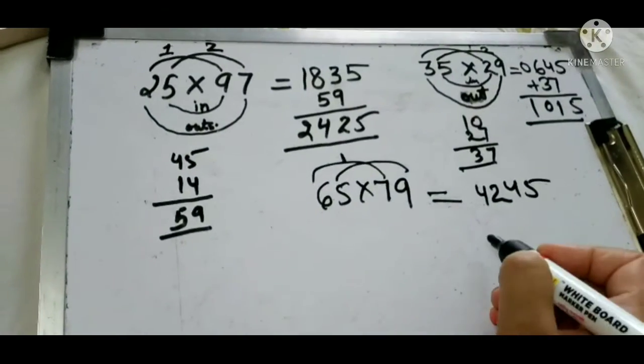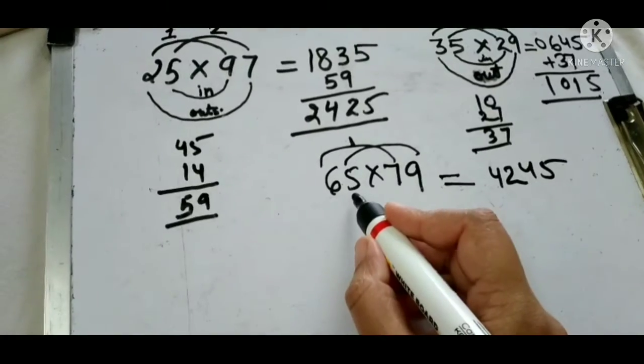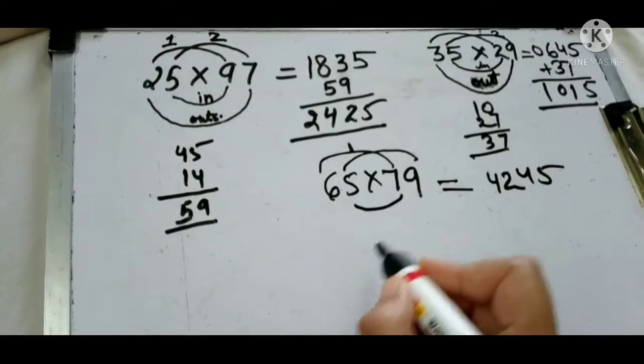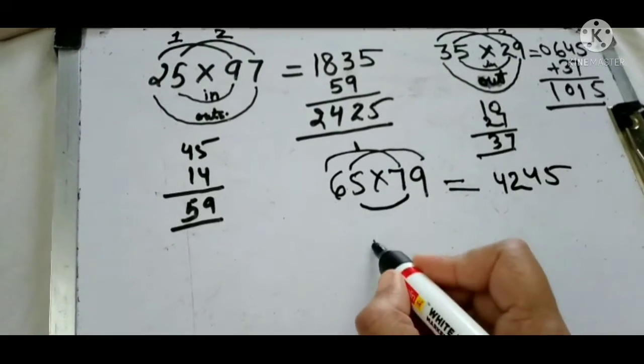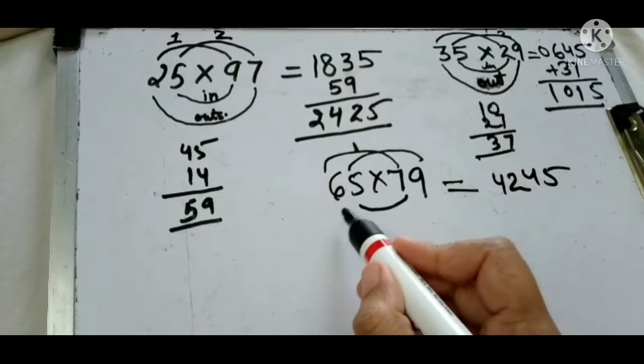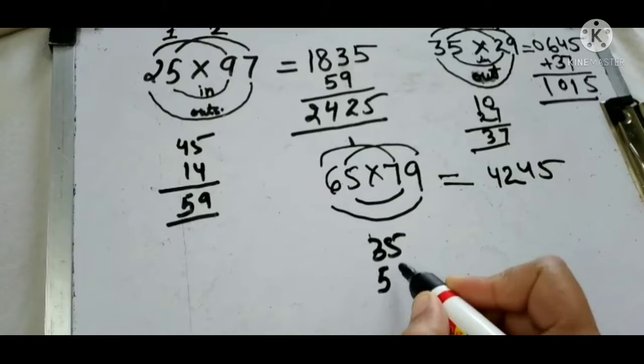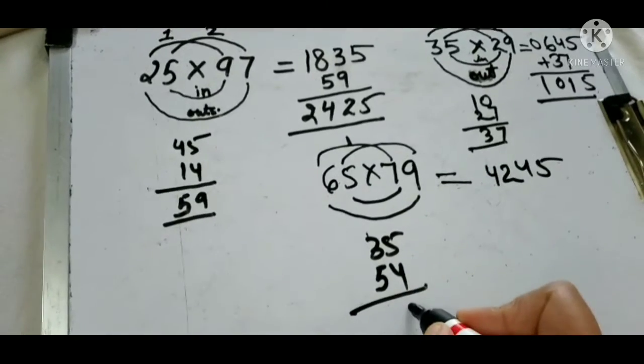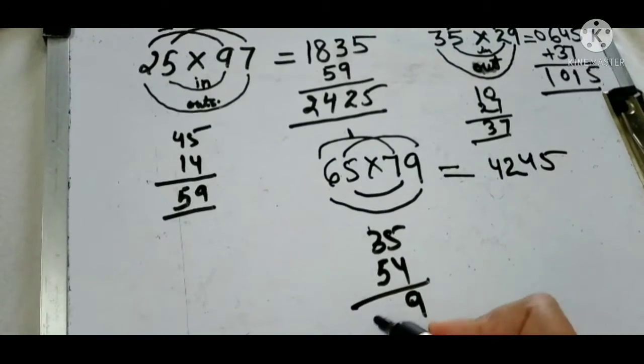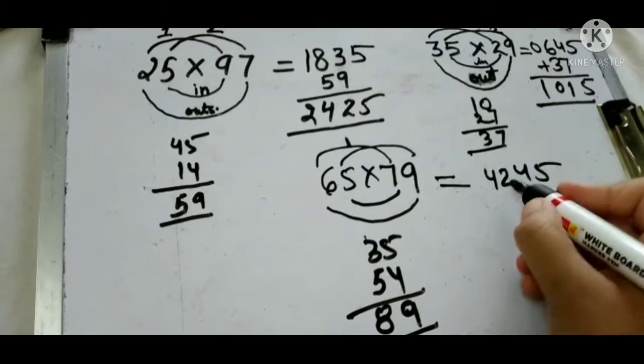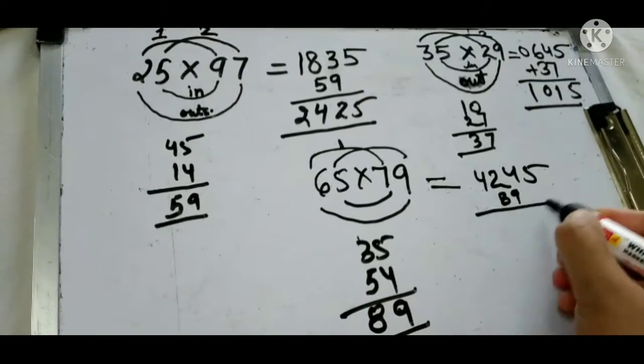And then what we have to do: in number multiply 35, and then out 54. Then add 89. We write here 89, 5. So this is your answer.